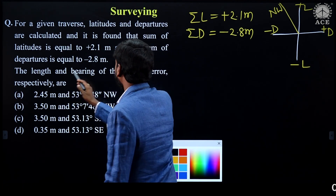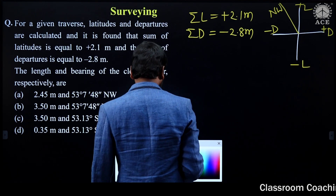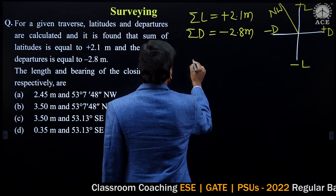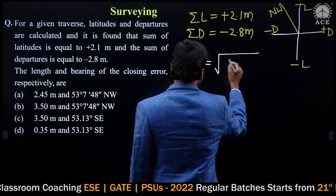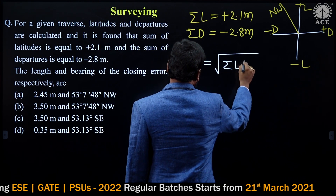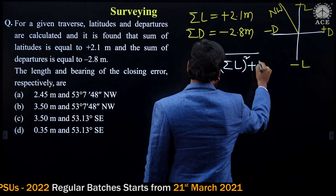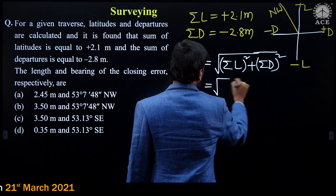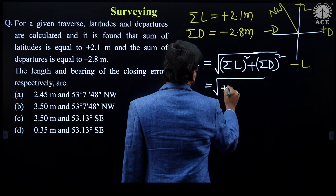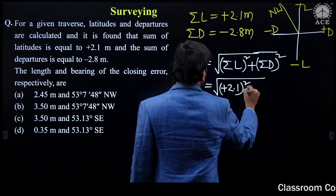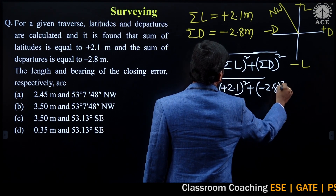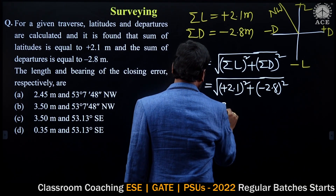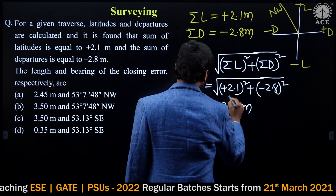Now we need to calculate the length and bearing of the closing error. The formula to calculate the length is: E equals square root of (sigma latitudes squared plus sigma departures squared). Substituting the values: square root of (2.1 squared plus 2.8 squared). The answer turns out to be 3.5 meters.